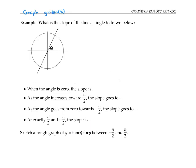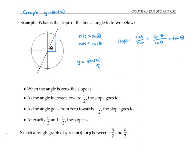To gain an intuition for the graph of y equals tangent of x, it's handy to look at the slope of a line at angle theta on the unit circle. The slope of this line is the rise over the run. The rise is given by sine of theta, and the run is given by cosine of theta. So the slope is given by sine theta over cosine theta, which is simply tan of theta. So if I want to graph y equals tan of x, I can think of x as being the angle and y as being the slope of the line at that angle.